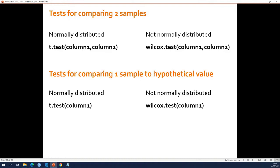Sometimes you want to compare one group of measurements to a theoretical value. For example, you measure all heart rates and want to see if the average is 60, as stated in a biology book. If you want to do what is called a one-sample test, you can use the same functions — simply give one vector as input and the test will automatically know it's a one-sample test. So the input is either one vector or two vectors.